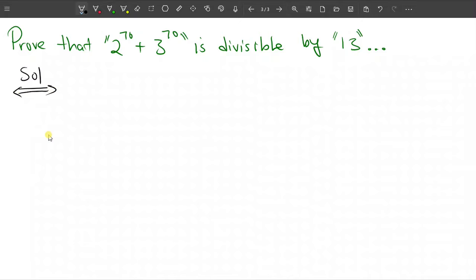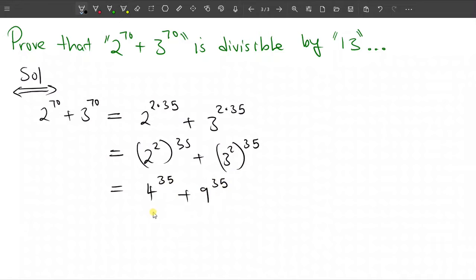So to solve this problem, at first we are going to take our given number, which is 2^70 + 3^70, and then we are going to rewrite this number in this form. We know that 70 can be broken down as 2×35, so this becomes (2^2)^35 + (3^2)^35, which gives us 4^35 + 9^35. Then we are going to stop here.